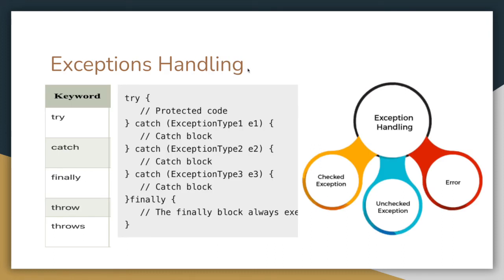Exception handling is not an OOP concept but is important for interviews. When code might throw an exception, we surround it with a try-catch block. The 'finally' block is always executed whether or not an exception is thrown — it runs after the try or catch block. The 'throw' keyword is used to throw exceptions explicitly. The 'throws' keyword in a method signature throws the exception to the calling method if an exception occurs.